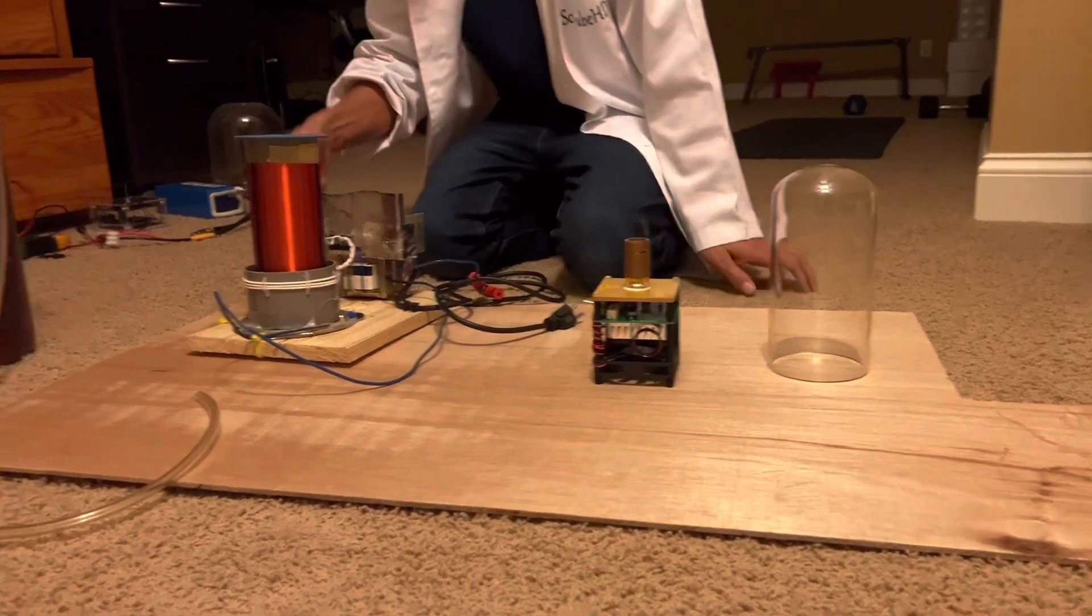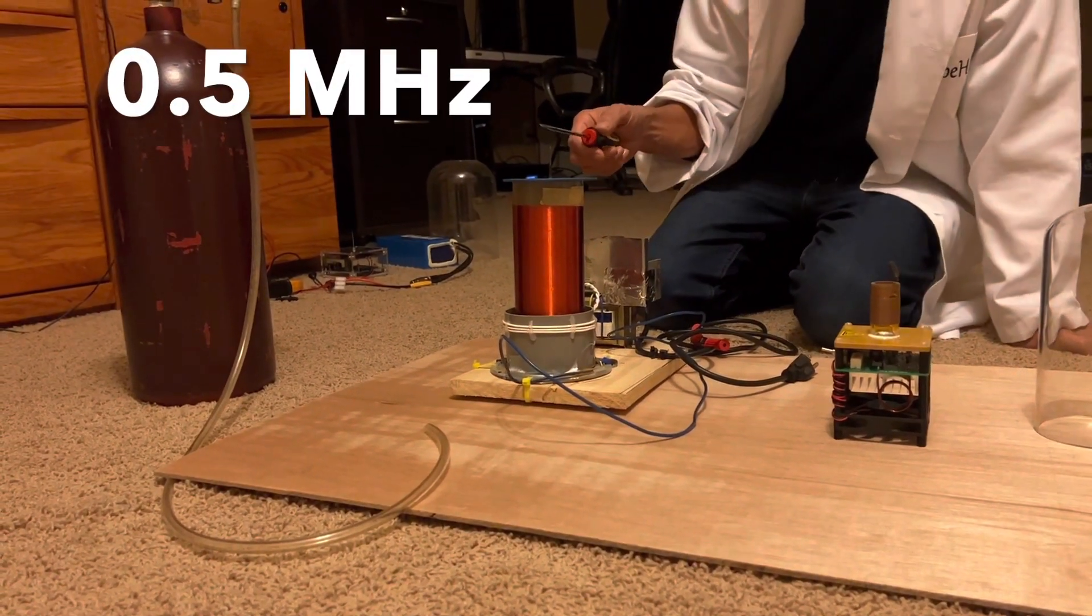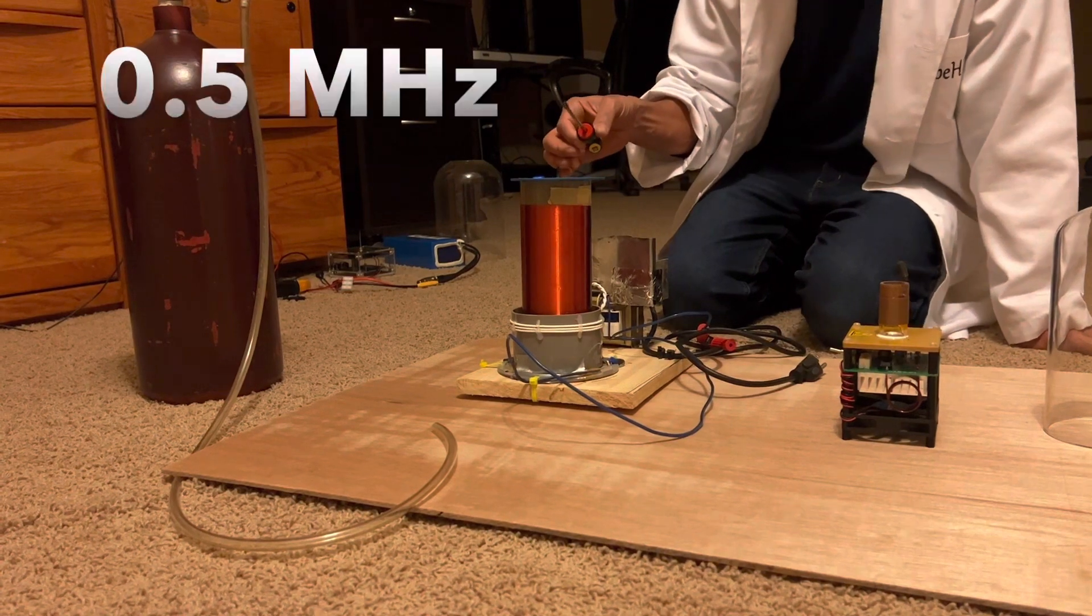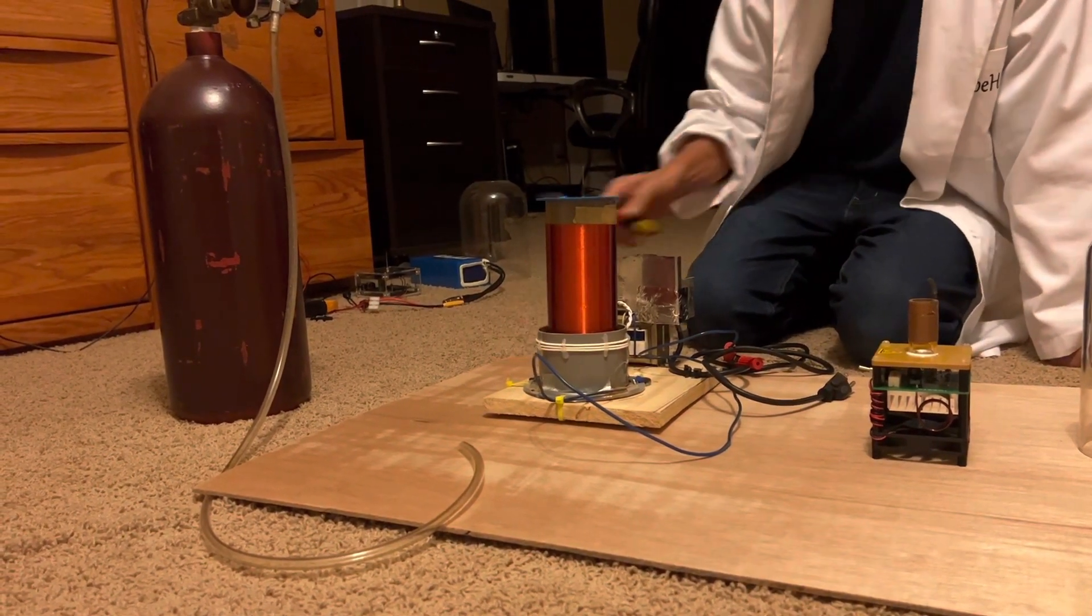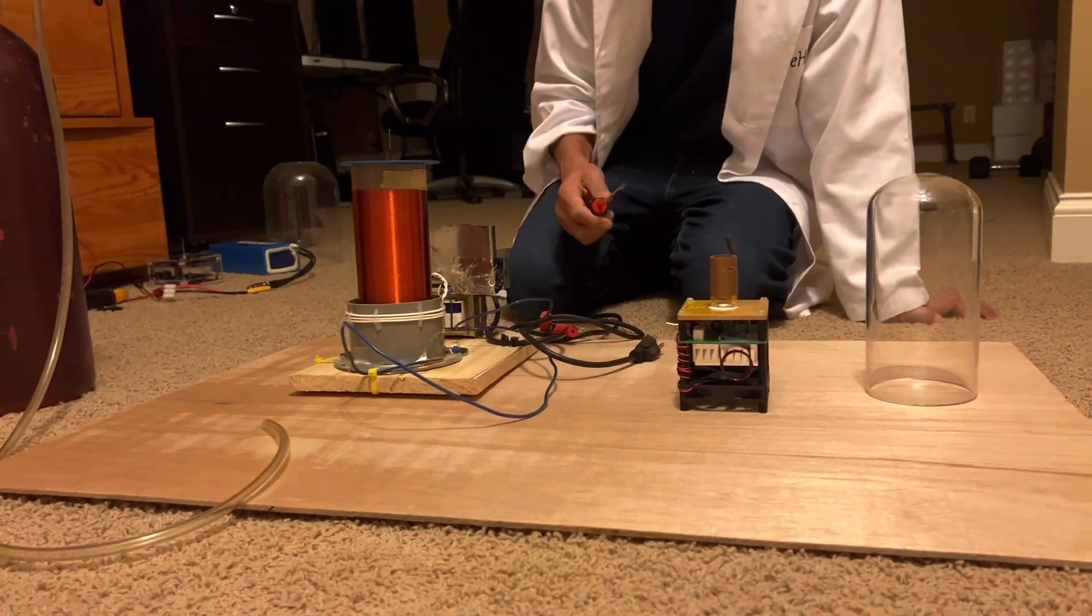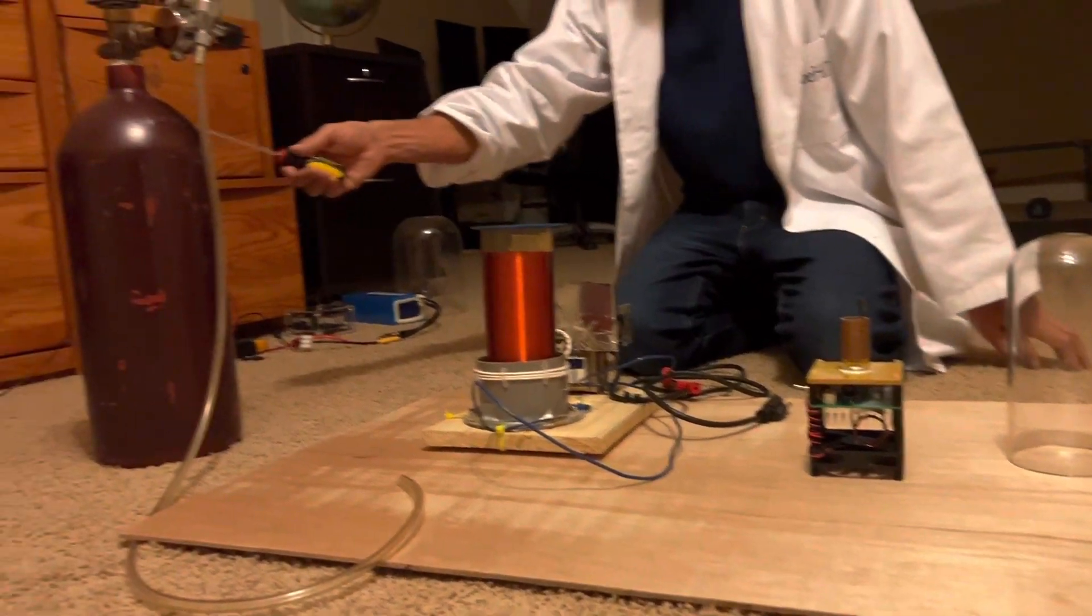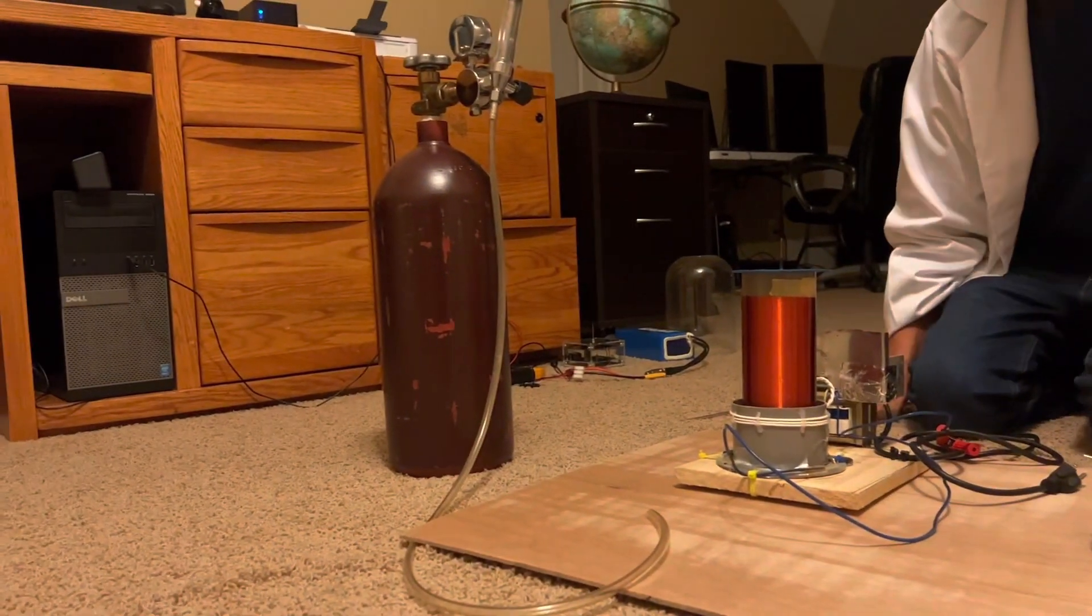And this is also a different type of continuous wave Tesla coil that also produces a sort of a fluffy kind of plasma. So both of them produce different effects, and what we're going to do is compare the effects of both of these coils in regular air versus argon, which I'm going to get from this tank. Let's begin.